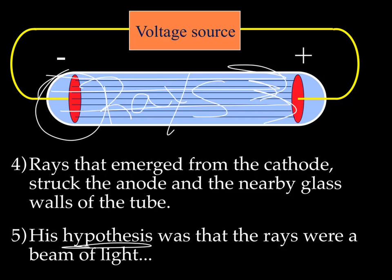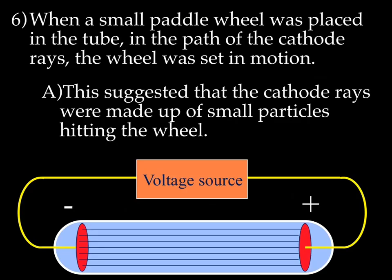Because this is a hypothesis, a good scientist is going to test this hypothesis. What he did next was he placed a small paddle wheel inside the tube. You can think of a paddle wheel like a pinwheel. He put a pinwheel inside the tube before he emptied out all the air. Then when he plugged in the battery to the metal plates, the rays started going again, and the pinwheel started spinning.